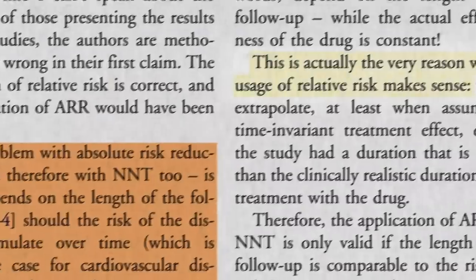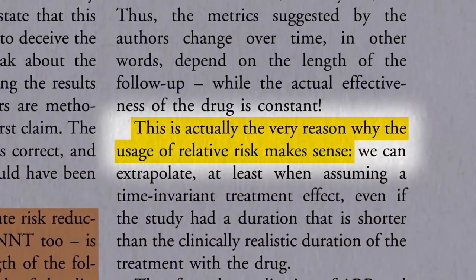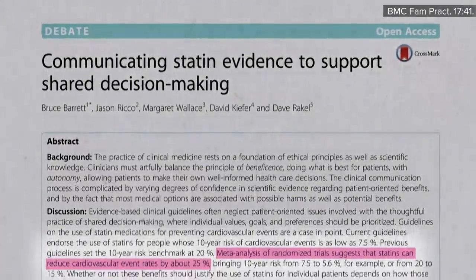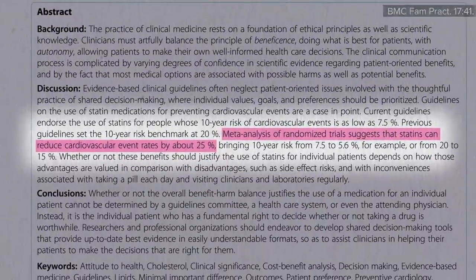This is the very reason why using relative risk makes sense. Absolute risk changes depending on what time frame you're talking about, but with relative risk, you know that whatever risk you have, you can cut that risk in half taking the drug. Now, statins only cut your risk 25%, but since cardiovascular disease is the number one killer of men and women, if you're unwilling to change your diet, that's a powerful argument in favor of these kinds of drugs.